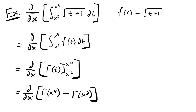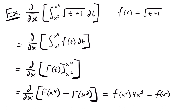Evaluating our antiderivative on x to the fourth power and x squared, we have the derivative of capital F of x to the fourth power minus capital F of x squared. Instead of one throwaway constant term, we now have two functions that both require the chain rule. For the first term: the derivative of the outside function gives small f of x to the fourth power, and we multiply by the derivative of x to the fourth power, which is 4x cubed. Then we subtract the derivative of the second term.